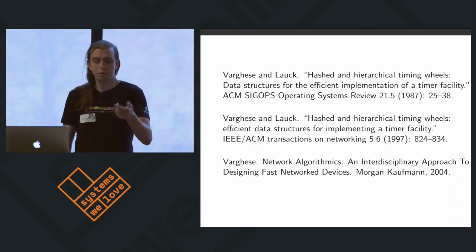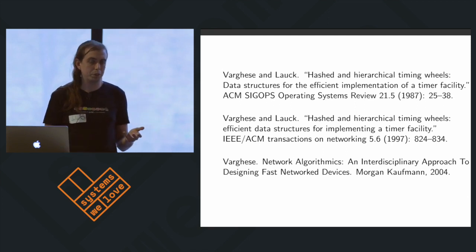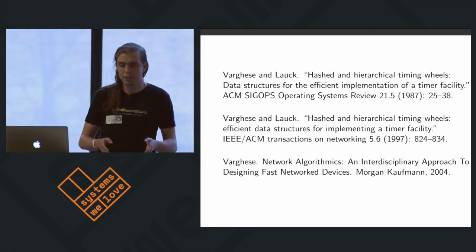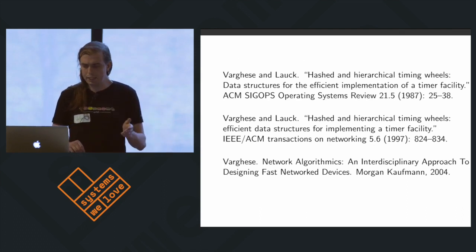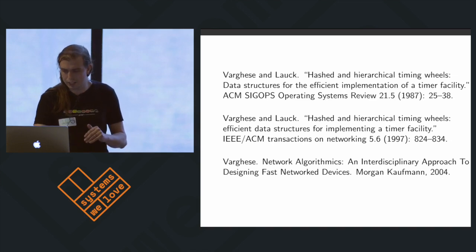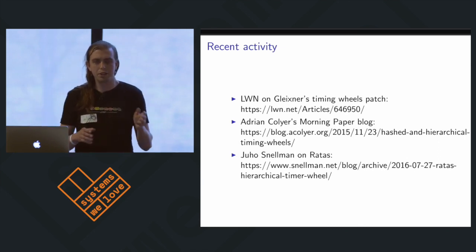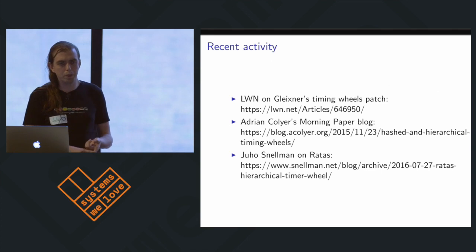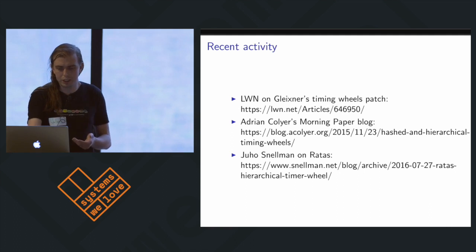They updated the paper in 1997 with results from BSD and so on. Then Varghese in 2004 published a great book, Network Algorithmics, which has timing wheels as a case study. These papers are all really interesting. There's a bunch of related work in calendar queues that I'll talk about if I have time. Serendipitously, around the same time, a new timing wheel got proposed for Linux and was merged in version 4.8, and there are a bunch of other really interesting things worth checking out.